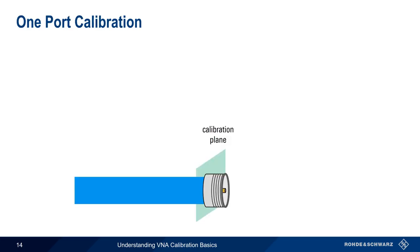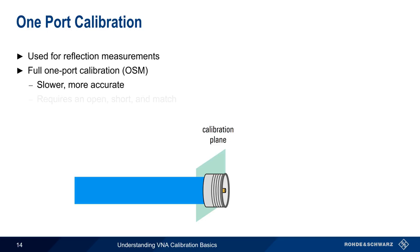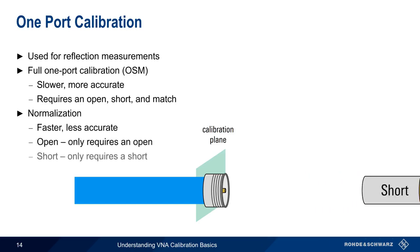Let's start with the one-port calibration types, that is, calibrations used when making reflection measurements. There are really two categories of one-port calibration. The first of these is a full one-port calibration, which is the slowest type of one-port calibration but provides the highest accuracy. It's the relatively slowest calibration because it requires an open, a short, and a match to be sequentially connected at the calibration plane. Normalization, on the other hand, is faster but less accurate, primarily because only one calibration standard is connected, either an open or a short.